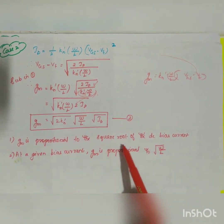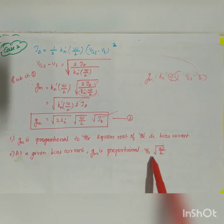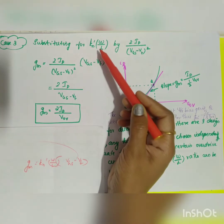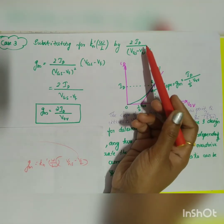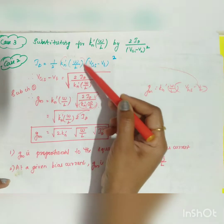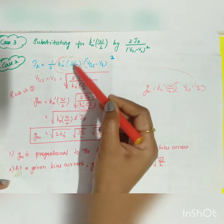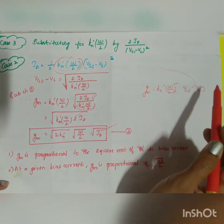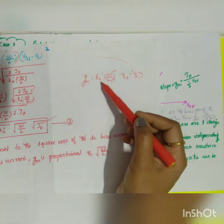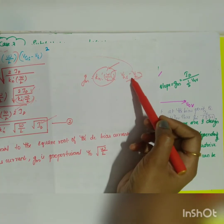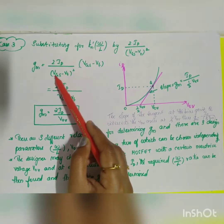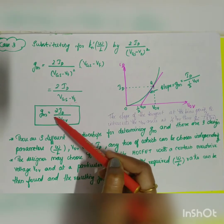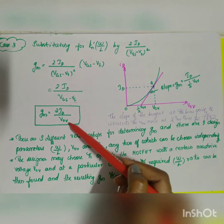In Case 2, GM is proportional to the square root of the DC bias current ID, and at a given bias current, also proportional to √(W/L). For Case 3, we substitute the value for KN' × (W/L) = 2ID / (VGS − VT)² back into the first expression. The (VGS − VT) terms partially cancel, leaving only one in the denominator, giving the third expression: GM = 2ID / (VGS − VT) = 2ID / VOV.